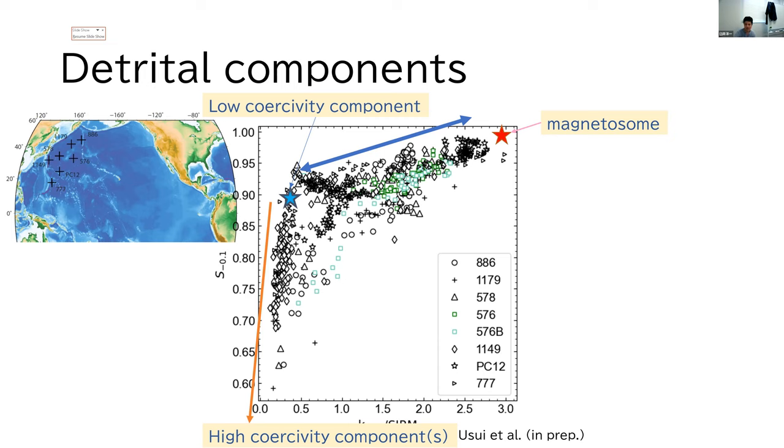I can only say there are more than one terrigenous component in the North Pacific pelagic clays. At the same time, this conclusion is rather robust. So we require more than one terrigenous component.